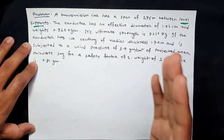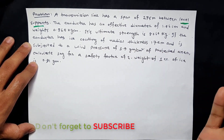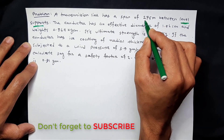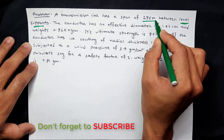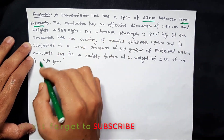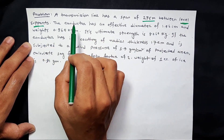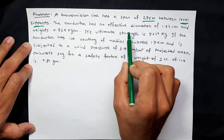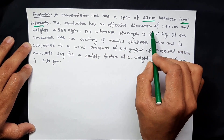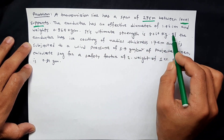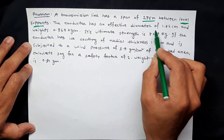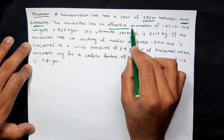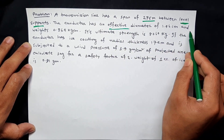This means the tower and pole. This is the span length, and this is L.